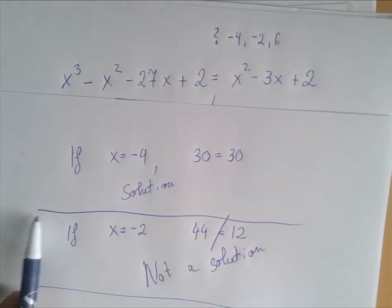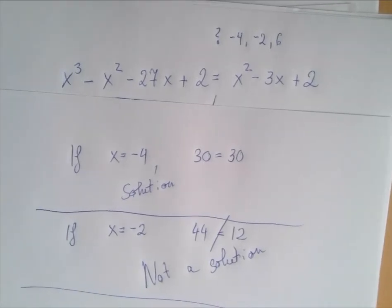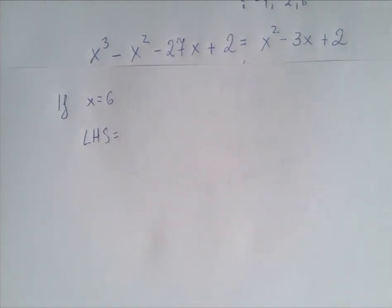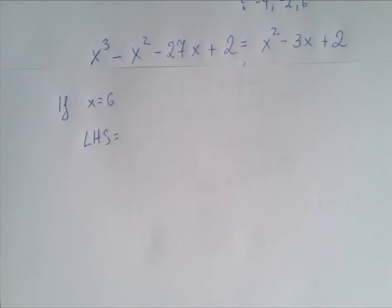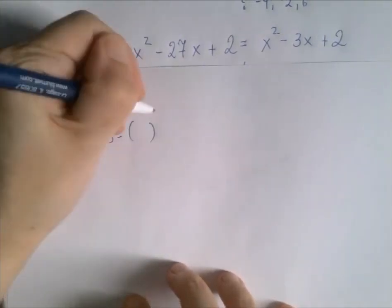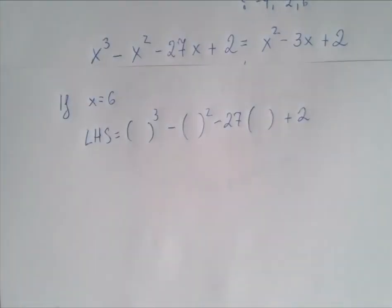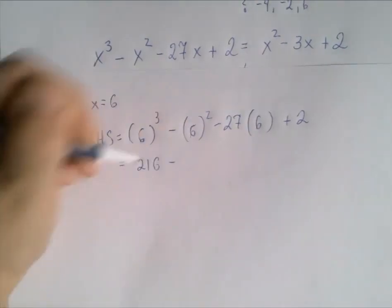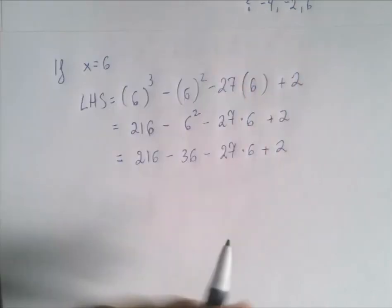Let's evaluate both the left-hand side and right-hand side using the value of 6 for x. When we replace the expression, instead of the variable we draw cute little parentheses. If the number we're substituting is negative, those parentheses are essential; if the number is positive, none of them will be necessary. The exponentiations go left to right: 6 to the third power is 216, 6 squared is 36, and 27 times 6 is 162.